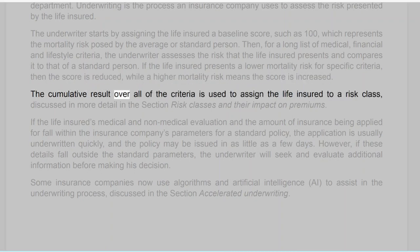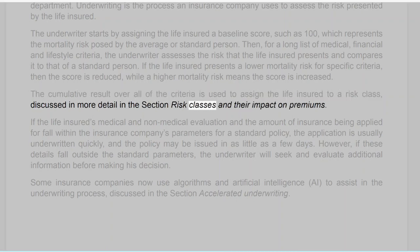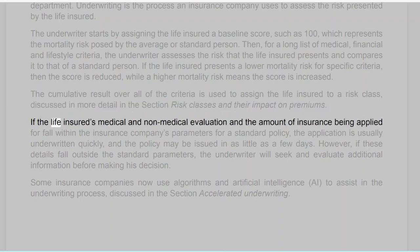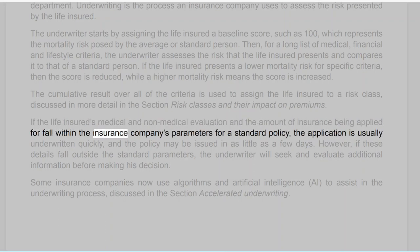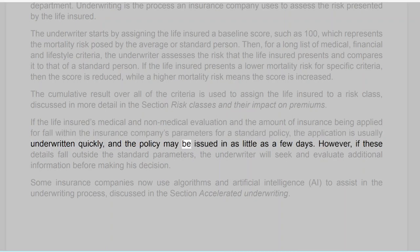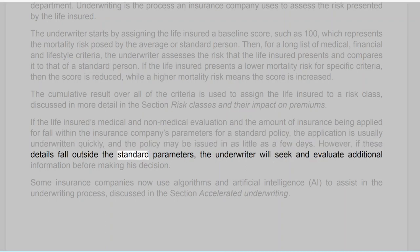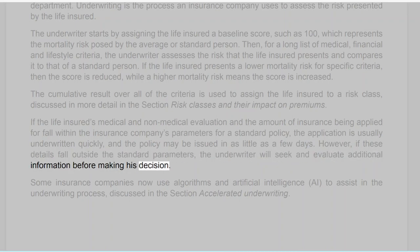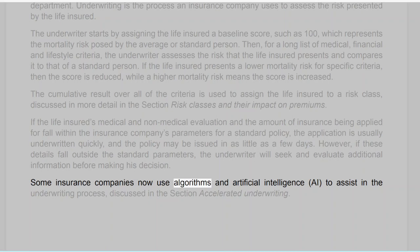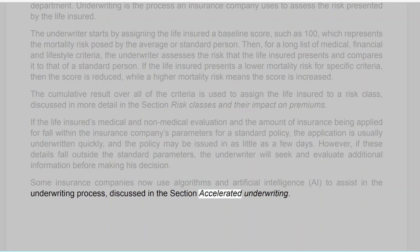The cumulative result over all of the criteria is used to assign the life insured to a risk class, discussed in more detail in the section on risk classes and their impact on premiums. If the life insured's medical and non-medical evaluation and the amount of insurance being applied for fall within the insurance company's parameters for a standard policy, the application is usually underwritten quickly and the policy may be issued in as little as a few days. However, if these details fall outside the standard parameters, the underwriter will seek and evaluate additional information before making his decision. Some insurance companies now use algorithms and artificial intelligence (AI) to assist in the underwriting process, discussed in the section on Accelerated Underwriting.